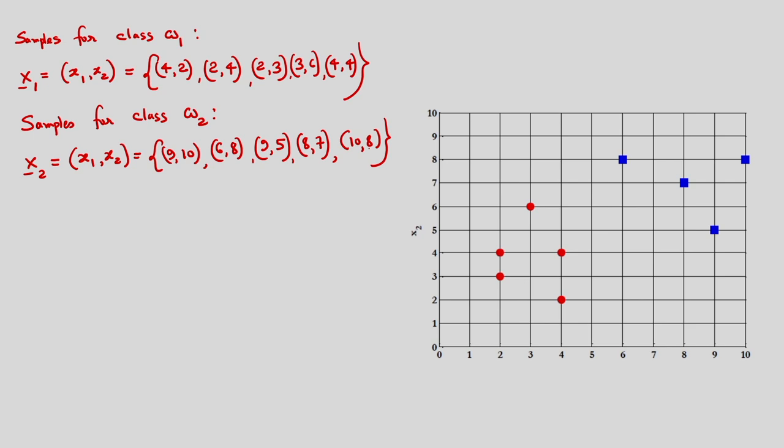One sample point is not coming into this figure. The red samples belonging to class omega 1 are: 2,4 and 2,3 and 4,2 and 3,6 and 4,4. These are the samples belonging to class omega 1 and these are the samples belonging to class omega 2.